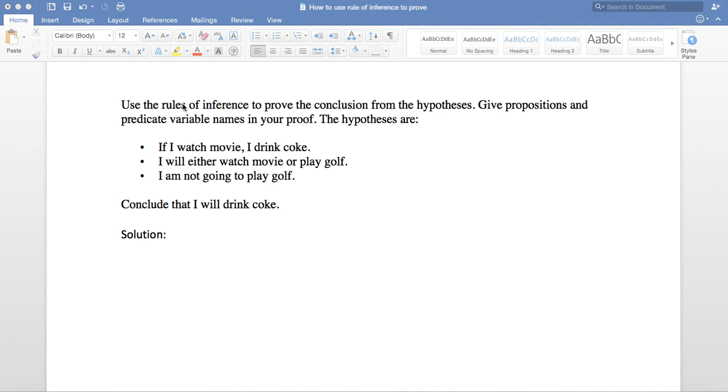Use rules of inference to prove the conclusion from the hypothesis. Give propositions and predicate variable names in your proof. The hypotheses are: if I watch a movie, I drink a Coke; I will either watch a movie or play golf; I am not going to play golf. With these three hypotheses, your conclusion shall be: I will drink a Coke.